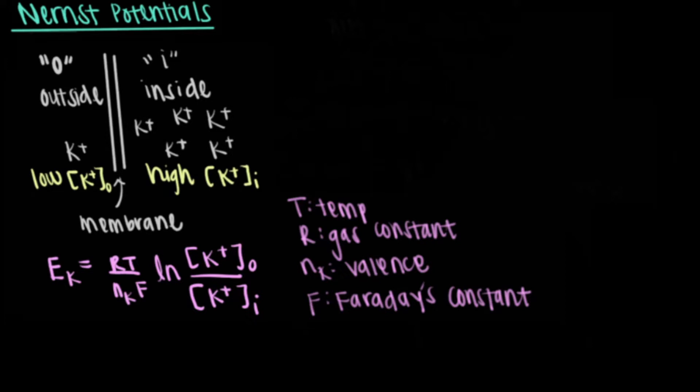Here, T is the temperature, N is the valence number of the ion, for instance plus one for potassium, R is the gas constant, and F is Faraday's constant.